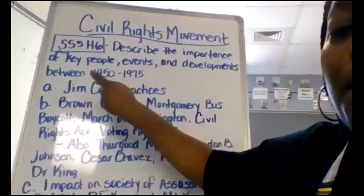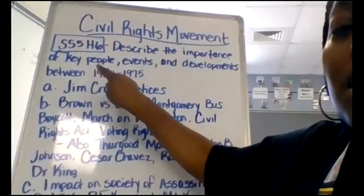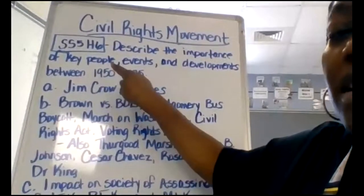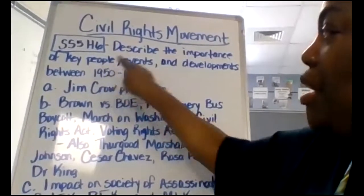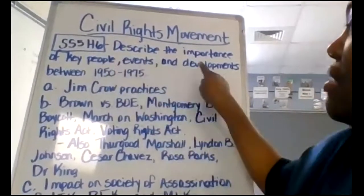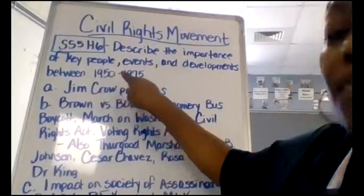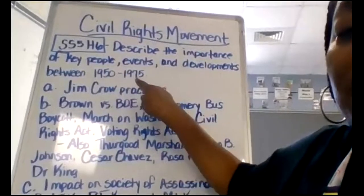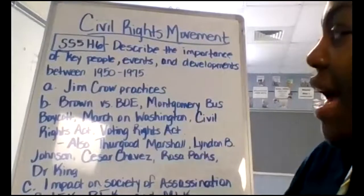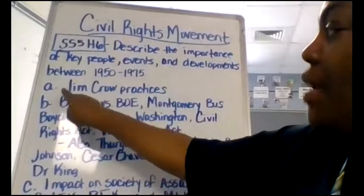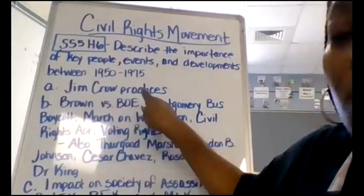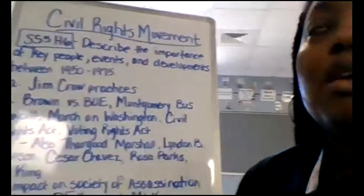Describe the importance of key people, key events, and the developments between 1950 and 1975. A: Jim Crow practices.